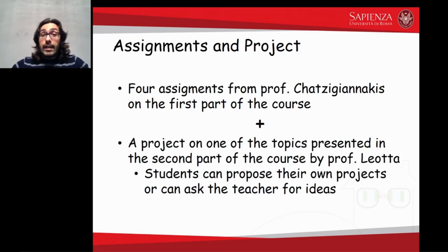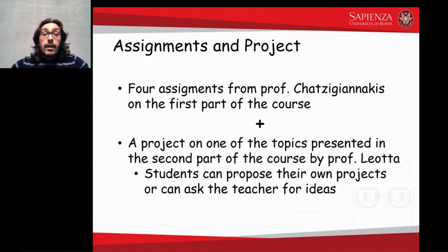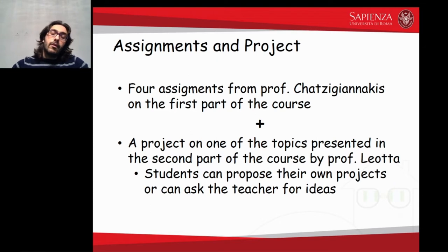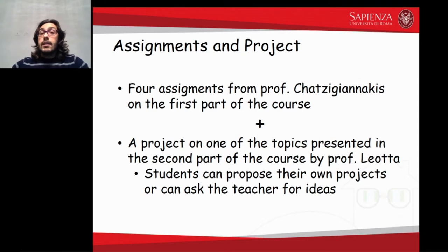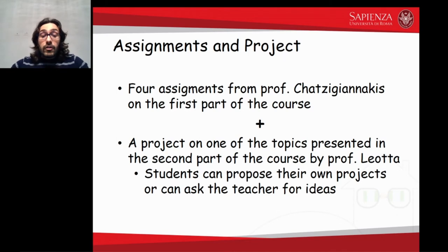The course is made up of five different lessons of four academic hours each, that is about three effective lesson hours each. In order to get credits for this exam — type B credits for the Italian PhD — you are required to do four assignments given by Professor Katzijanakis on the topics of the first part of the course, and a final project on one of the topics I will present in the second part. Concerning the projects, you can propose your own project by looking at all the different topics covered during the course, or ask me or Ioannis for ideas. Welcome to the PhD course.